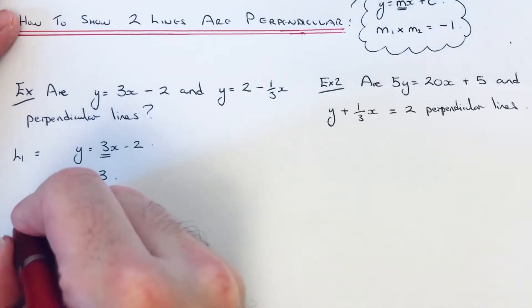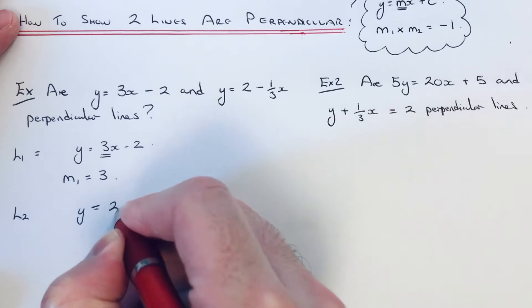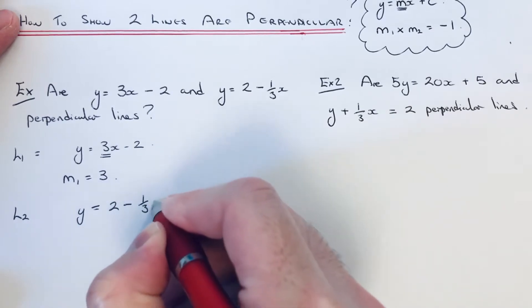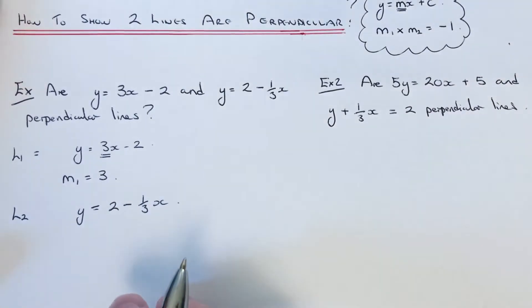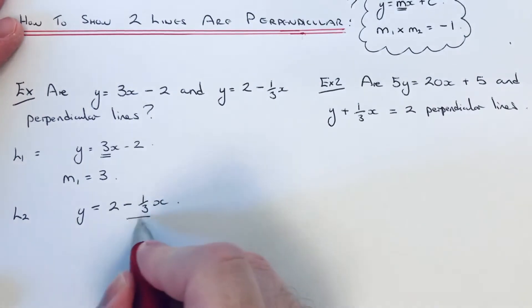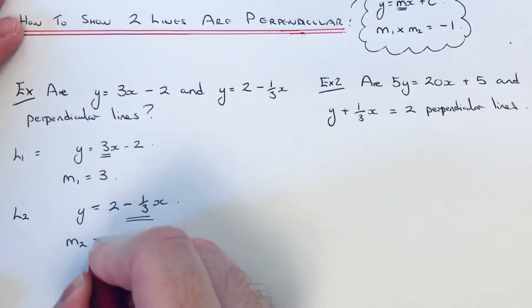Let's have a look at our second line, which is y=2-⅓x. So this time the number before x is minus one third. So the gradient of our second line is minus one third.